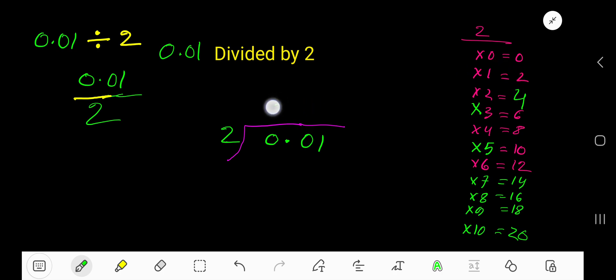0 times, so 0 times 2 is 0. If you subtract, you are getting 0. Bring down this 0. Before the 0 there's a decimal. Decimal must come to the question directly. 2 goes into 0 how many times?